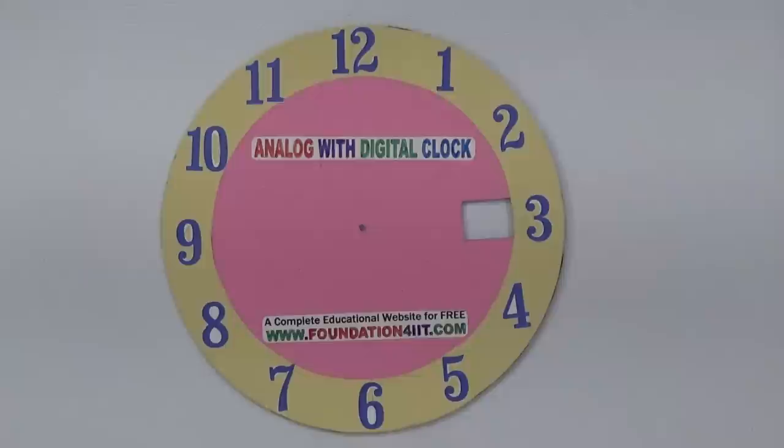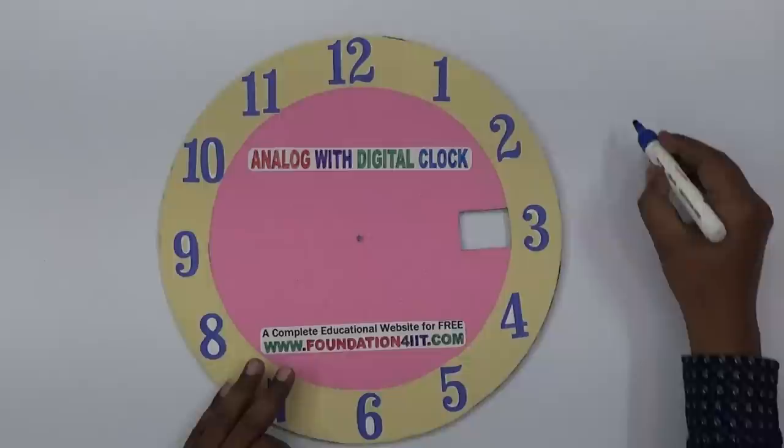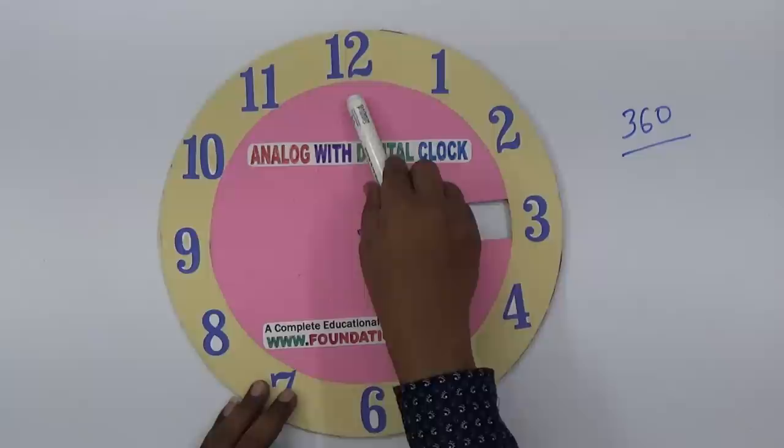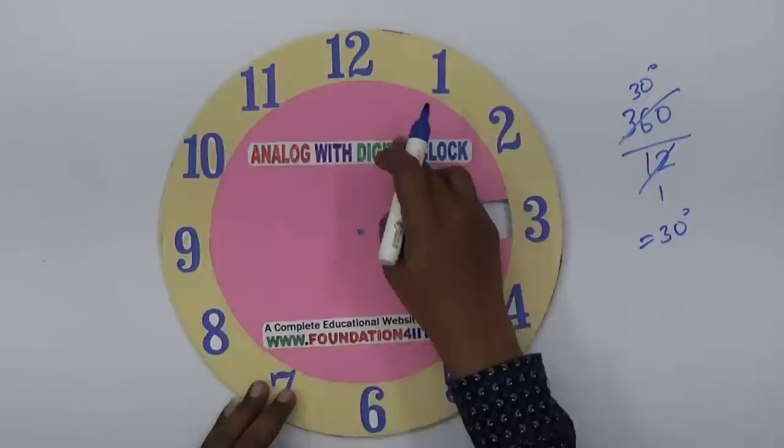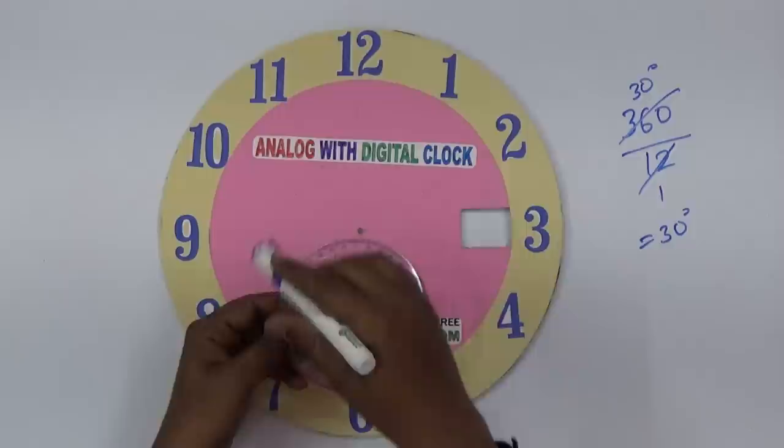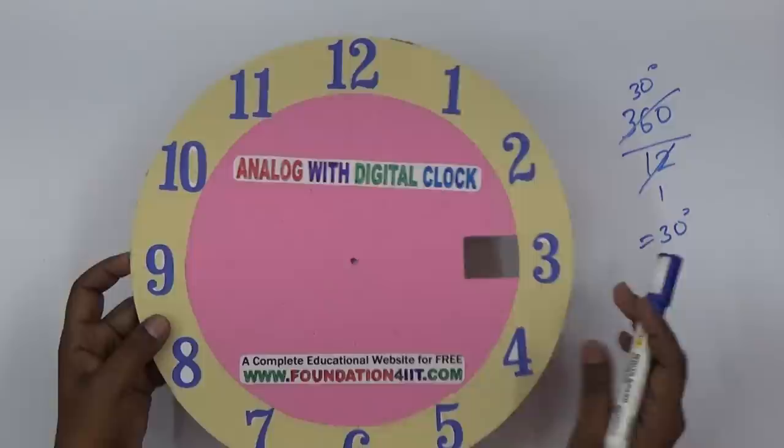To prepare the analog with digital clock, you need to take one circular sheet — I've used cardboard. The total angle of the circle is 360 degrees. Since we have 1 to 12, that's 12 parts, so 360 divided by 12 equals 30 degrees each. Use a protractor to measure exactly 30 degrees and prepare this sheet.